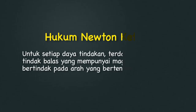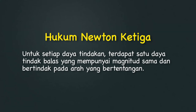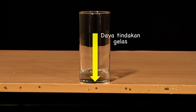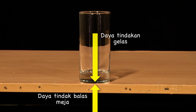Sekarang, mari pula kita bincangkan hukum Newton yang ketiga. Untuk setiap daya tindakan, terdapat satu daya tindak balas yang mempunyai magnitude sama dan bertindak pada arah yang bertentangan. Sebagai contoh, sebuah gelas diletakkan di atas permukaan meja. Berat gelas itu bertindak ke atas meja pada arah ke bawah. Berdasar hukum Newton ketiga, meja itu bertindak balas dengan menghasilkan daya yang sama magnitude dengan berat gelas, tetapi pada arah yang bertentangan iaitu ke atas.